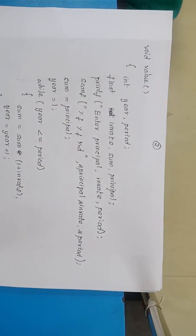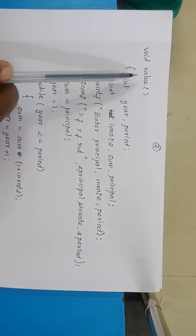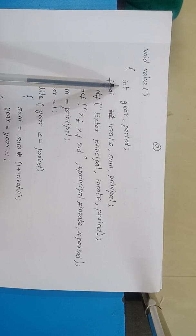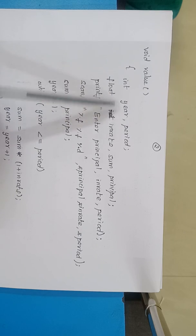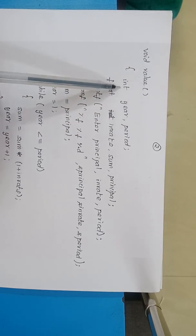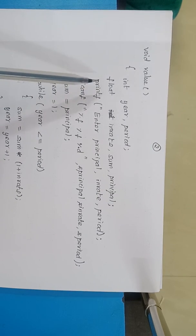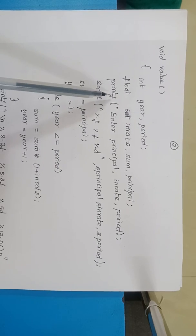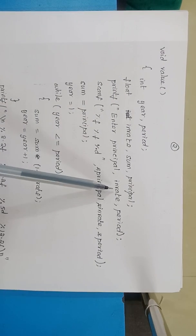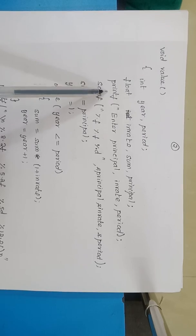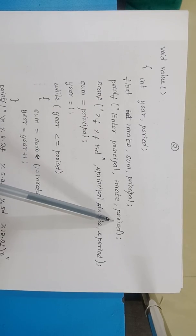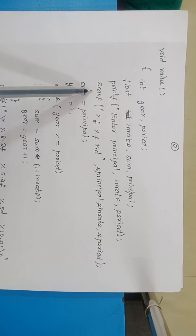Once again we are invoking the second function value, and the control passes to value. Getting inside the subprogram value, we are declaring two variables here: period as an integer, and in_rate and sum and principle as float. Now I am going to get the values of principle, interest rate, and period. We are using a printf statement: enter principle, in_rate, period. We are reading the data using a scanf statement.